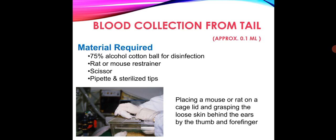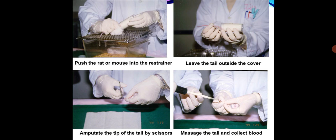Place a mouse or rat on a cage lid and grasp the loose skin behind the ear with the thumb and forefinger. Push the rat or mouse into the restrainer, leaving the tail outside the cover. Amputate the tip of the tail by scissors. Massage the tail and collect the blood.